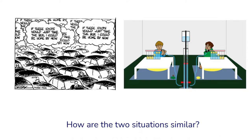We can compare this situation of the traffic jam with the situation in the experiments that we have explored previously with the children and chimpanzees cooperating. Think about how these two situations are similar. Even though they are very different situations, do they have a similar underlying structure?